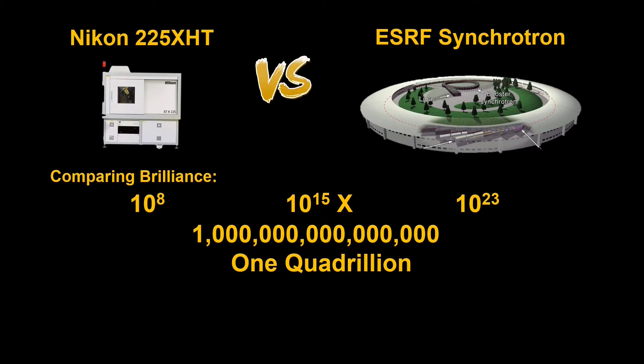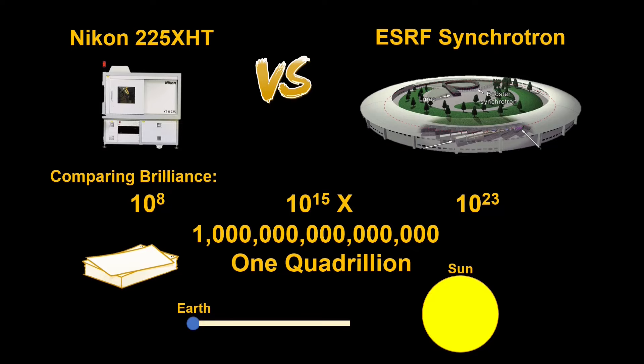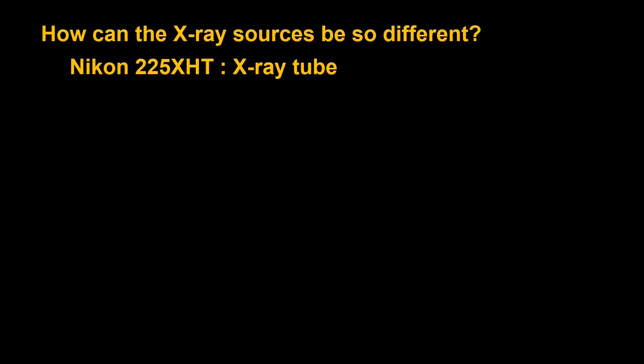And to put that into perspective, if we had one quadrillion pieces of paper and we stack them on top of each other, that stack would reach over 60 percent of the distance between the Earth and the Sun. So that is very bright. The question now is how could they be so different? And in order to get a general understanding of that, we'll have to look at how each one produces X-rays.